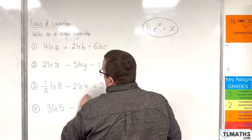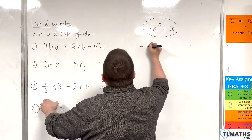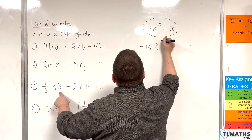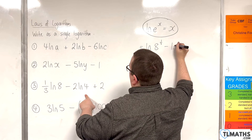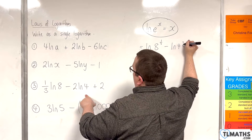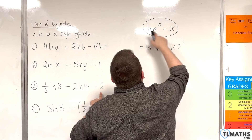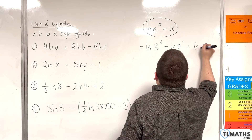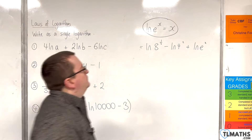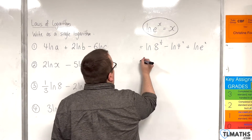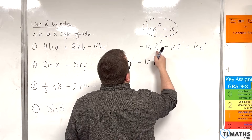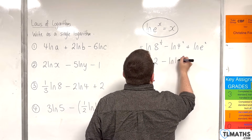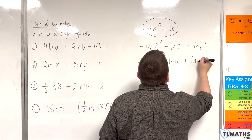First, deal with the powers: we have the natural log of 8 to the power of 1 third, take away the natural log of 4 squared. For the plus 2, using the rule with x equal to 2, that becomes plus the natural log of e squared. Tidying up: 8 to the power of 1 third is 2, and 4 squared is 16, so we have the natural log of 2, take away the natural log of 16, plus the natural log of e squared.